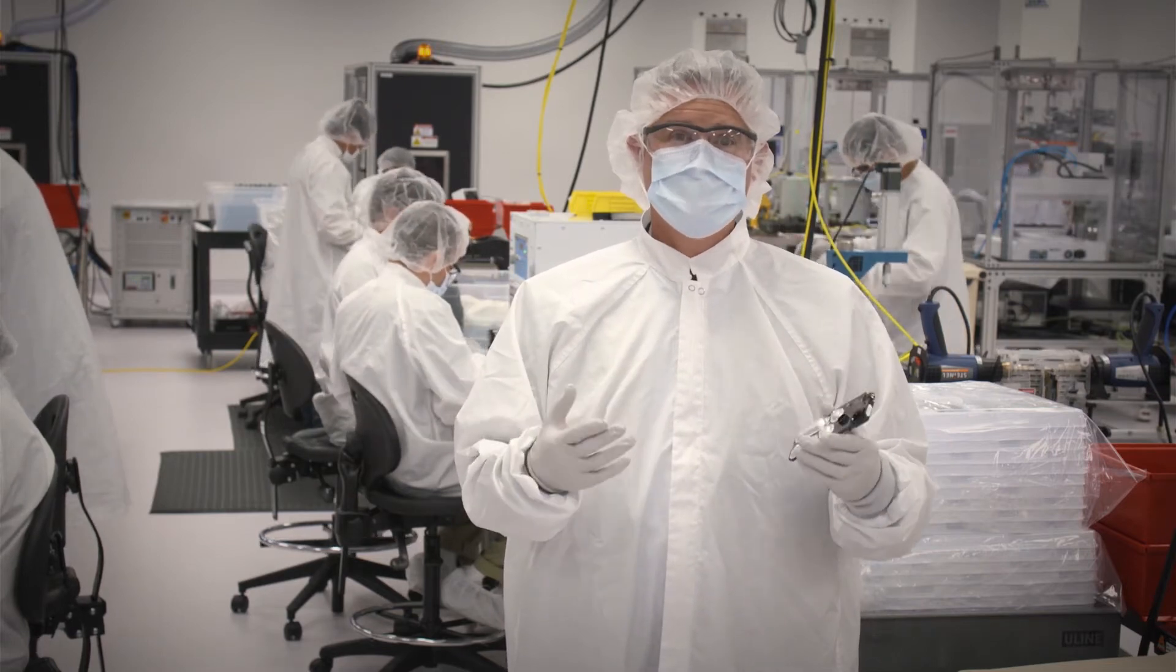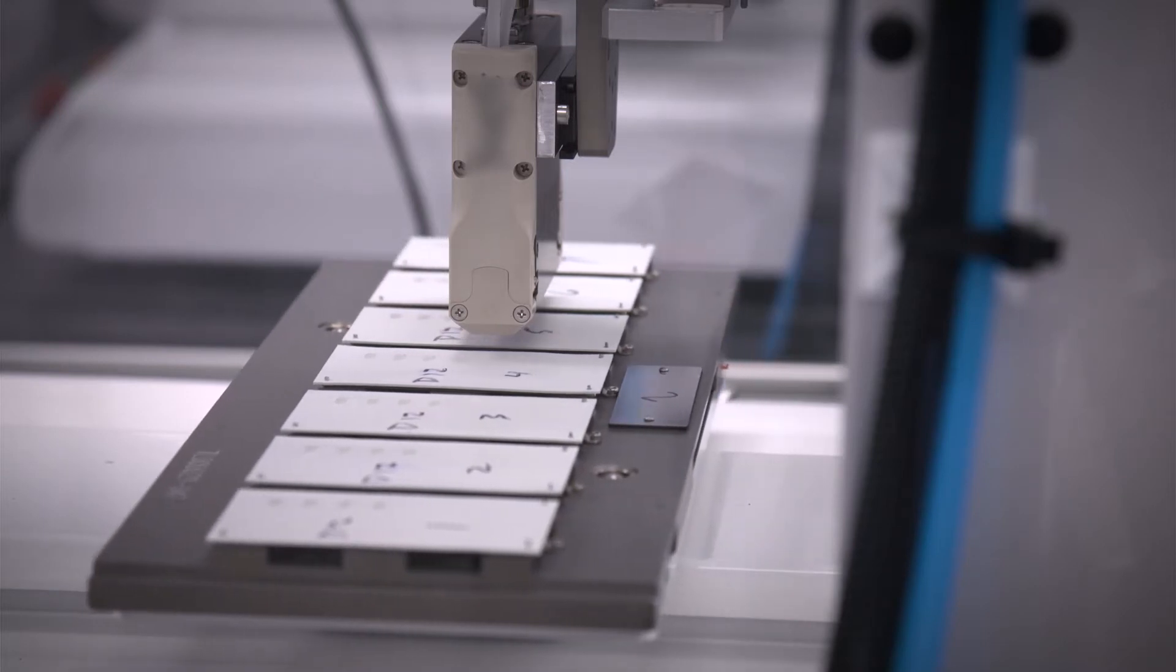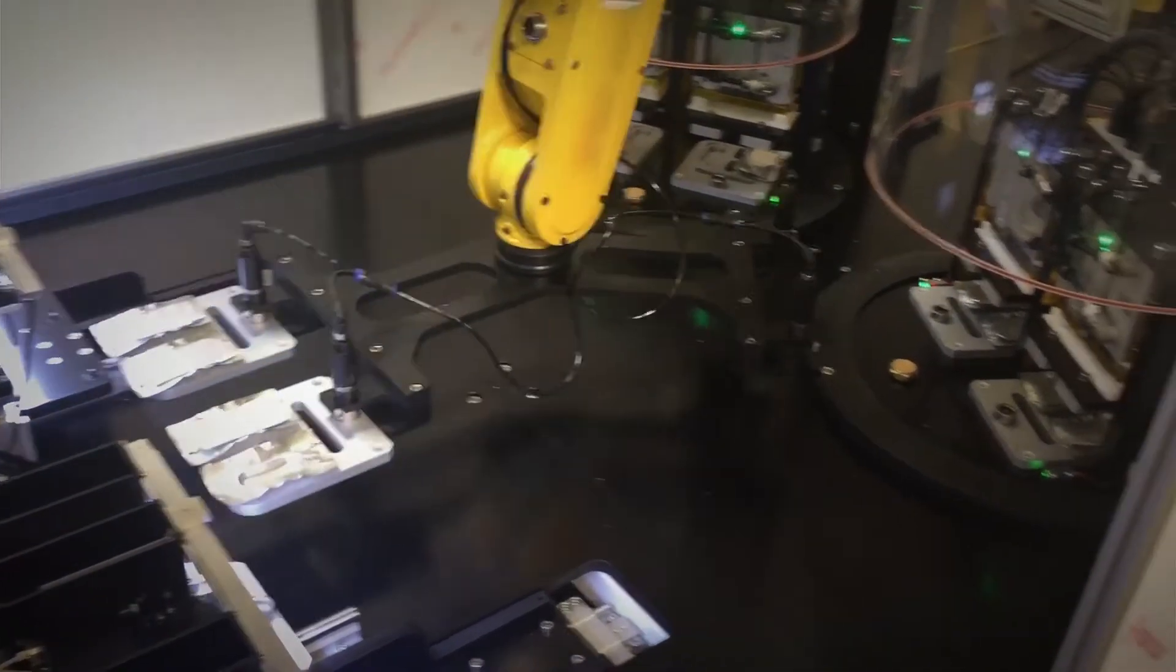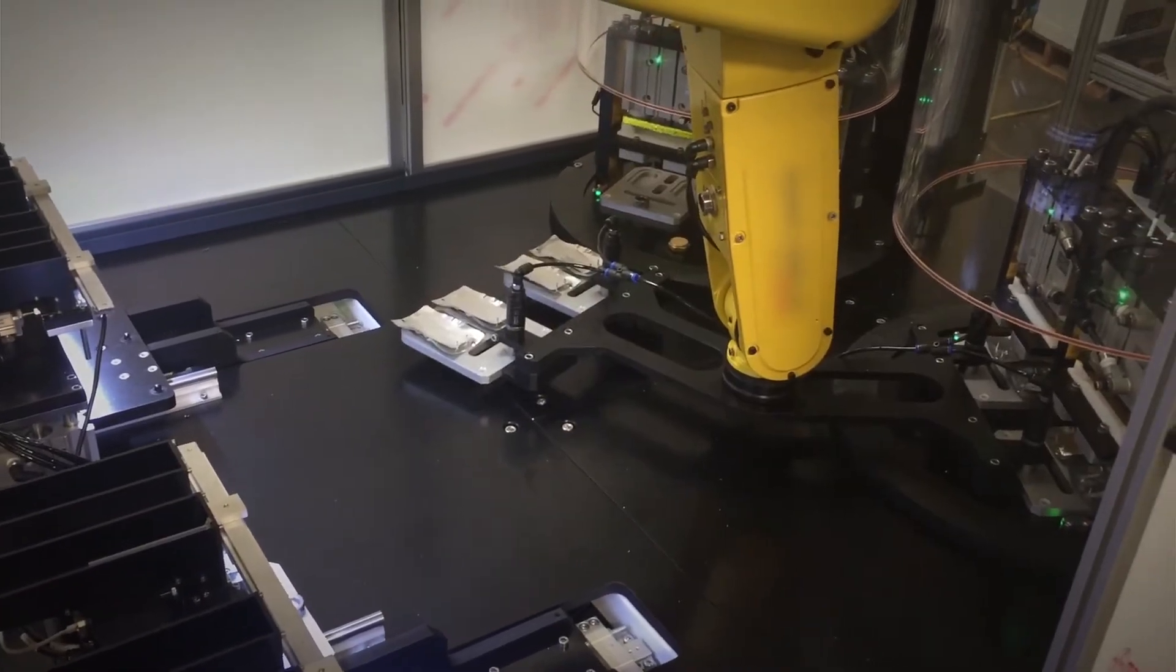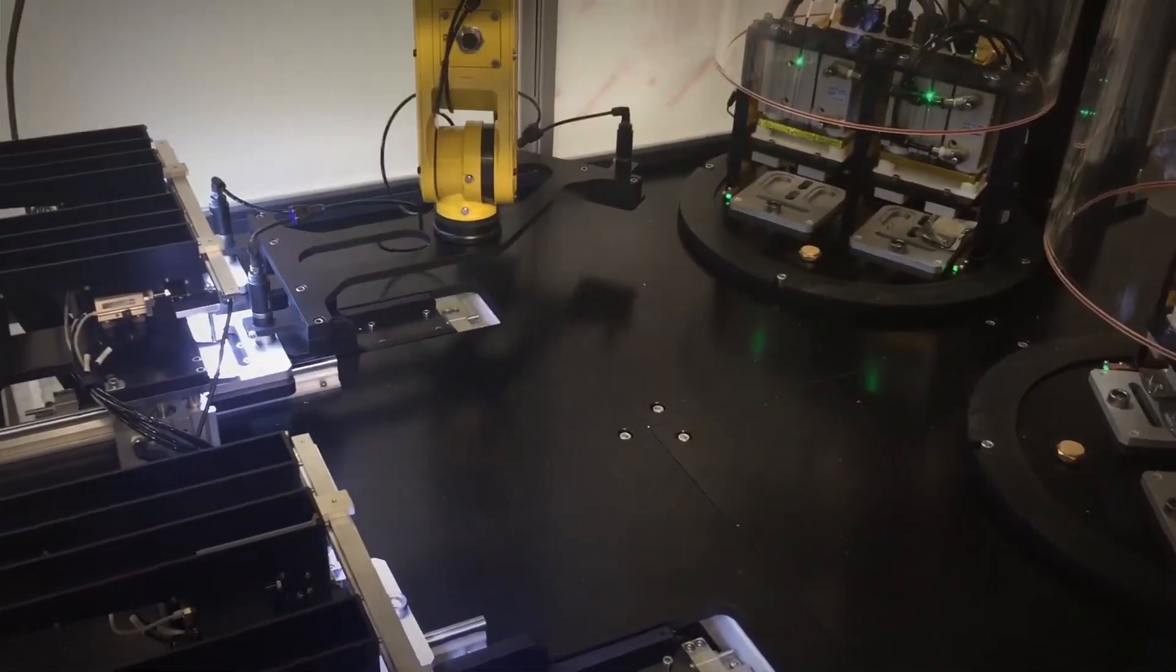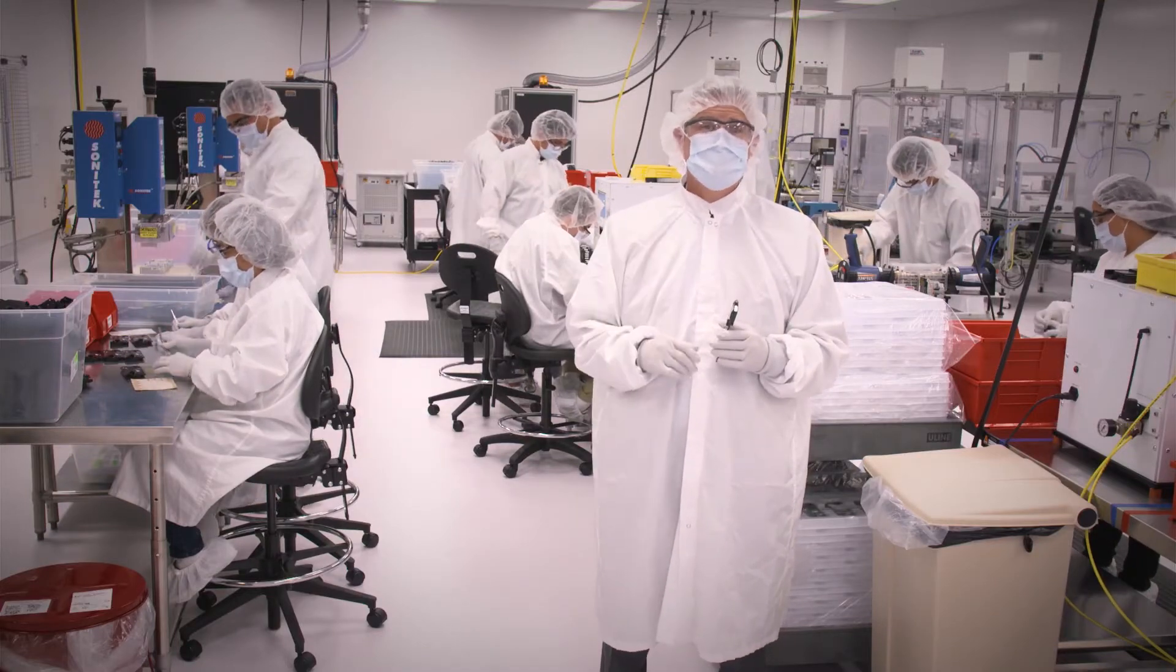As we continue to scale our operations, LRM assembly is a process where we are adding more automation. For example, this is a custom industrial robot we developed to handle one of the liquid reagent components of the ePlex cartridge. Now that we've reviewed LRM assembly, let's head over to the coating room.